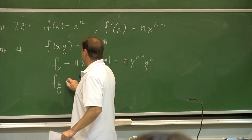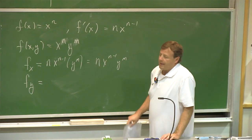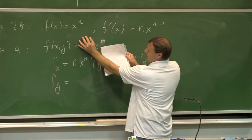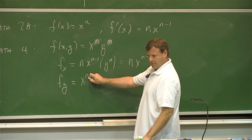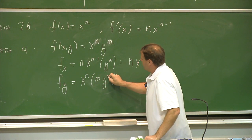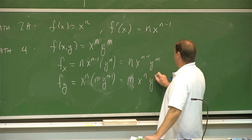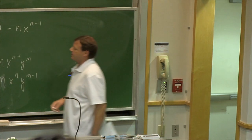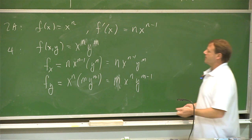For f sub y, I pretend the x part is a constant — x to the n comes along for the ride — and I take the derivative of y to the m, which gives m y to the m minus 1. So f sub y equals x to the n times m y to the m minus 1. These are the types that show up all the time in economics, so that's why we're focusing on them.